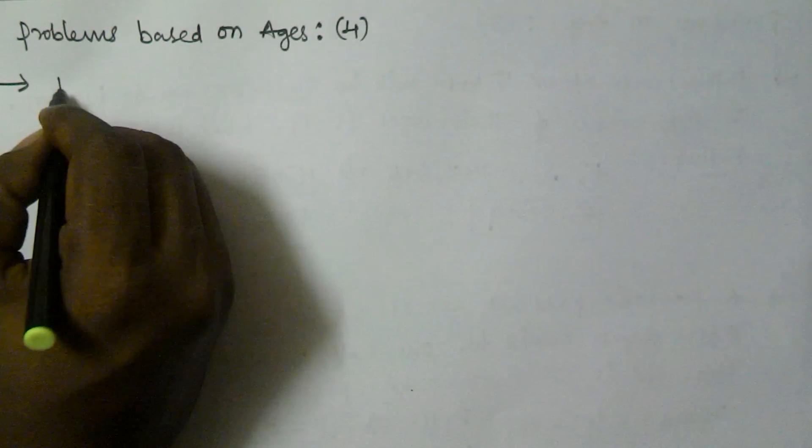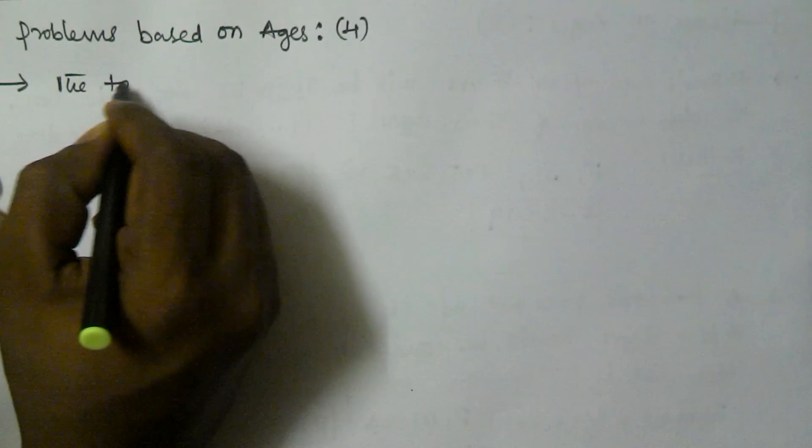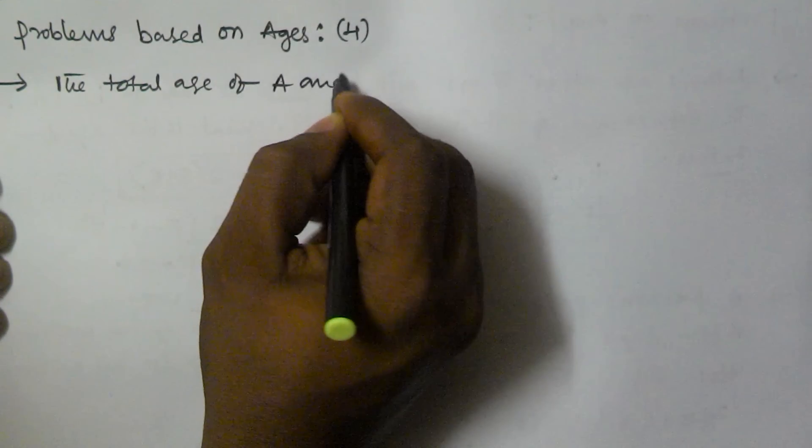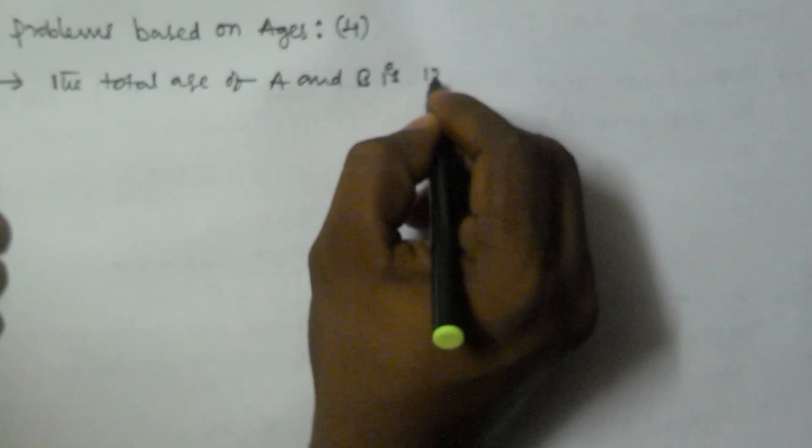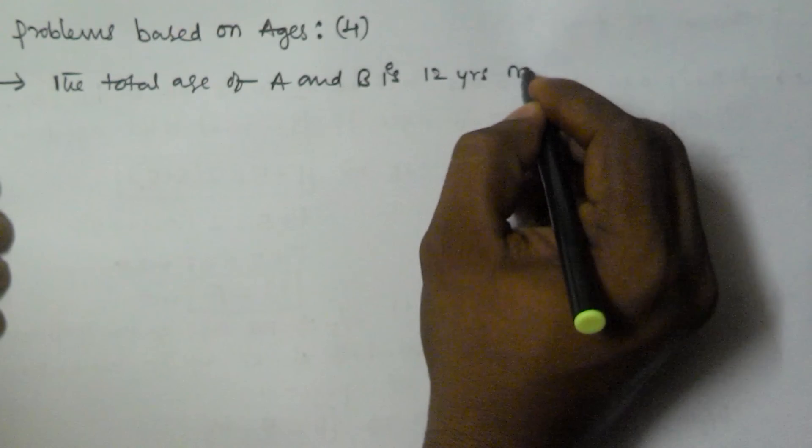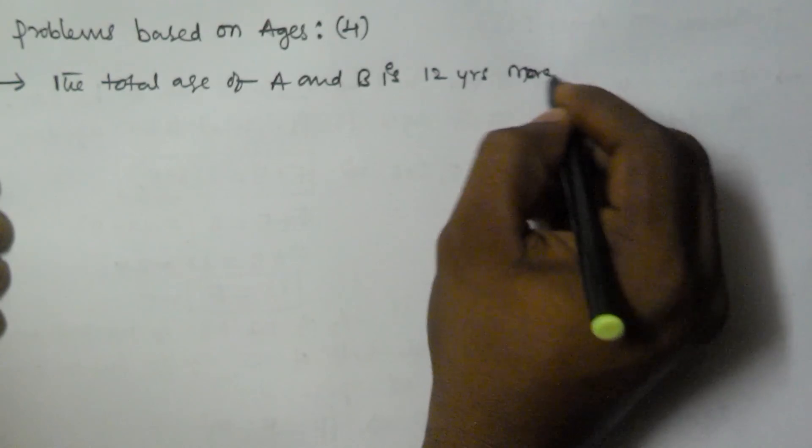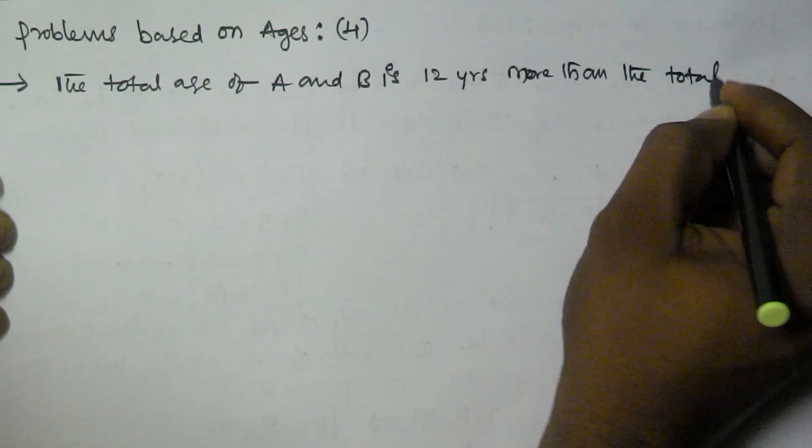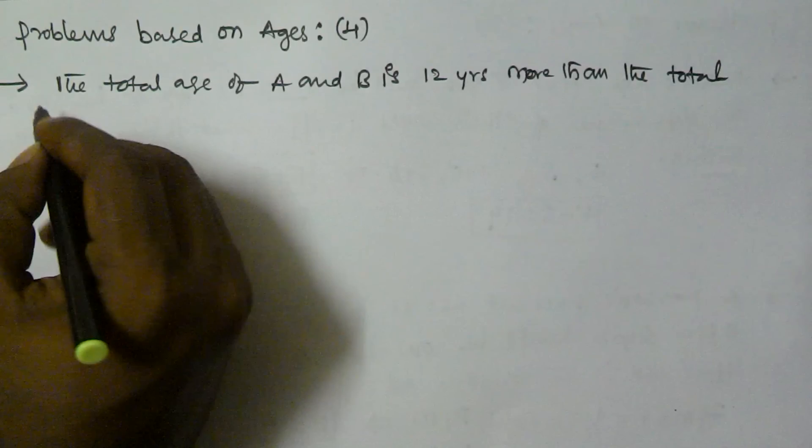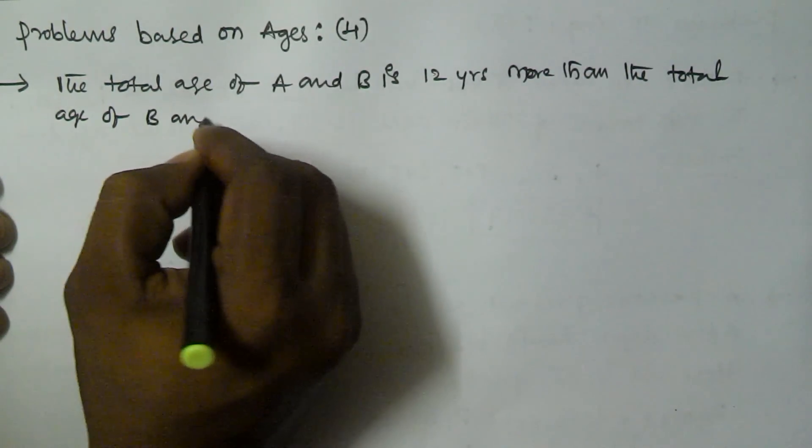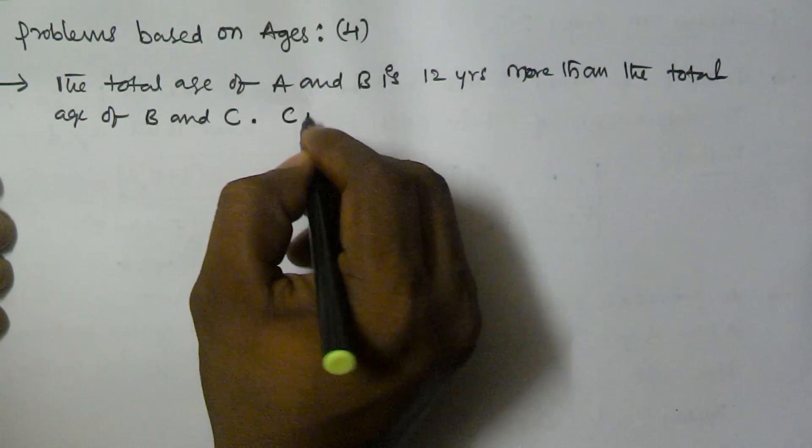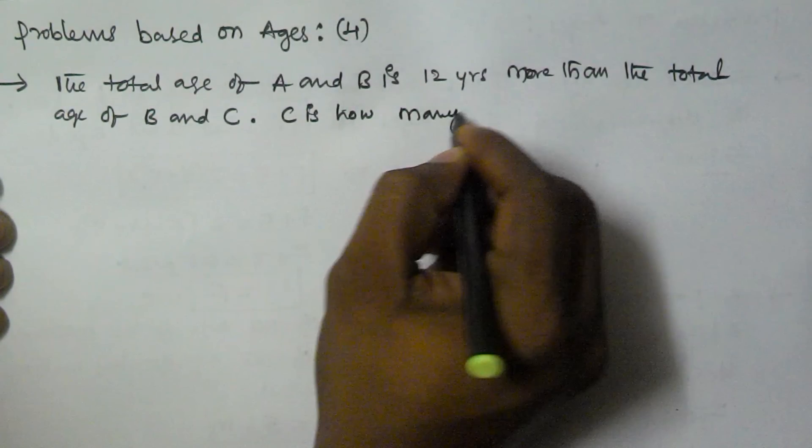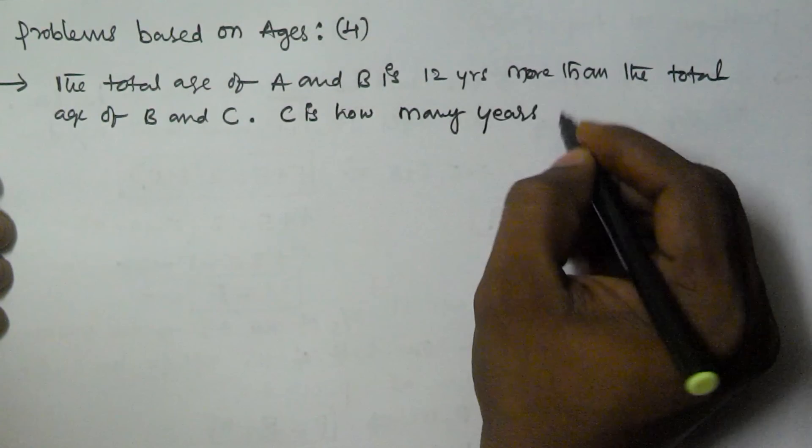Let's consider a problem. The total age of A and B is 12 years more than the total age of B and C. C is how many years younger than A?